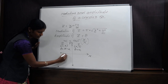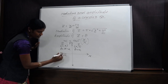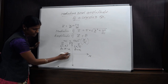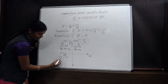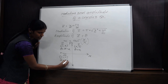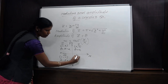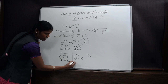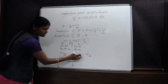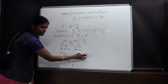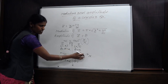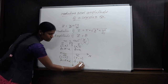In the third quadrant, x is negative and y is also negative. In the fourth quadrant, x is positive and y is negative. Therefore θ = 2π − α for the fourth quadrant.